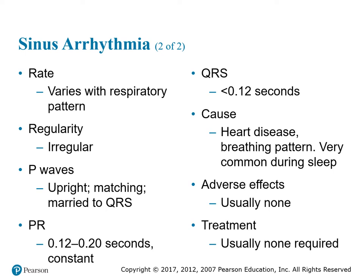For sinus arrhythmia: your rate varies according to respiratory patterns; your regularity is irregular; your P waves will still be upright, matching, and married to your QRS; your PR interval will stay consistent between 0.12 to 0.20 seconds; your QRS will be less than or equal to 0.12 seconds. Causes include heart disease, breathing pattern, and it is very common during sleep, such as sleep apnea. There are usually no adverse effects, and no treatment is usually required.